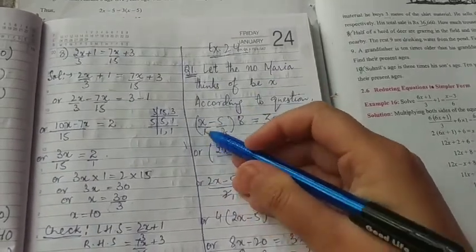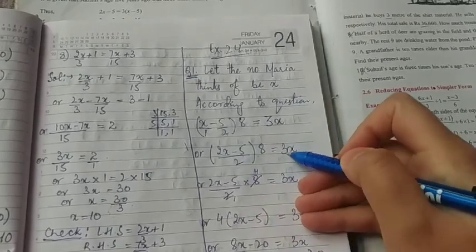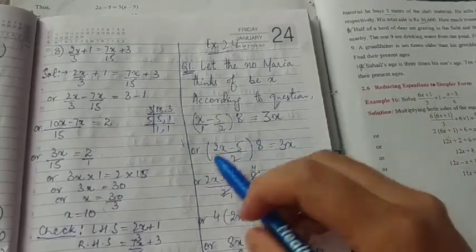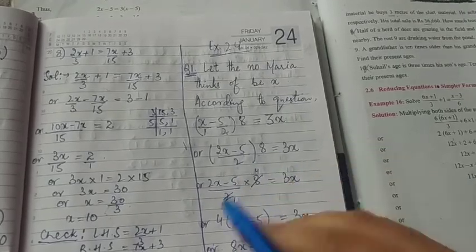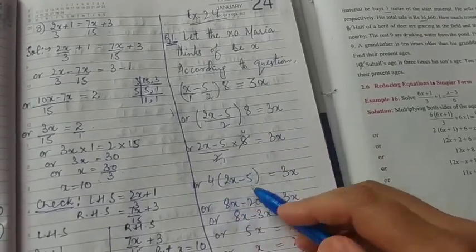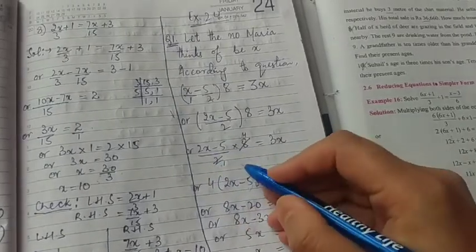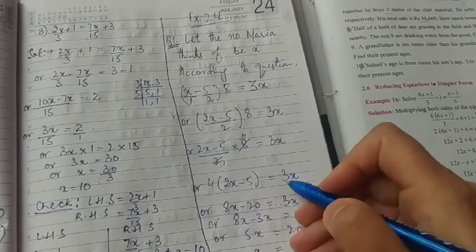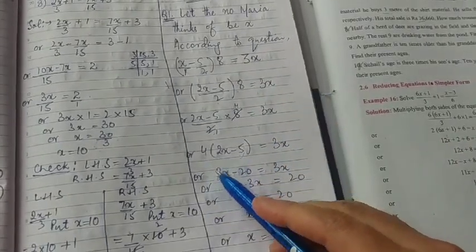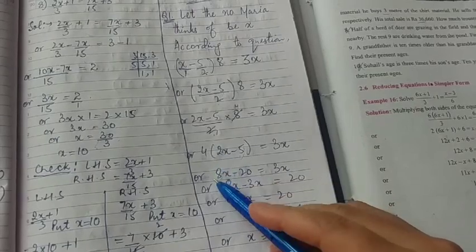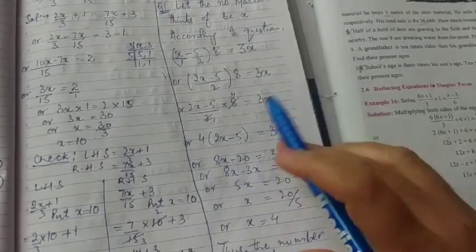Okay, so what I'll do now, I'll just cross multiply here. It will be two into x, two x minus one into five, five upon two ones are two, into eight equals to three x. I hope it's clear. Now what I'll do, this two ones are two, two fours are eight, so it will be two x minus five whole four, because this four will be multiplied to both of them. So here it is: four into two x is four twos are eight, eight x minus four fives are twenty equals to three x.